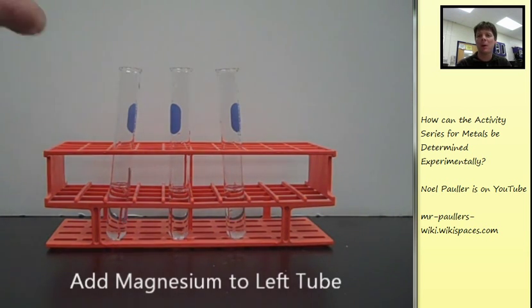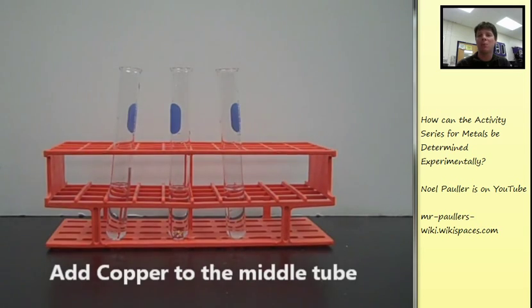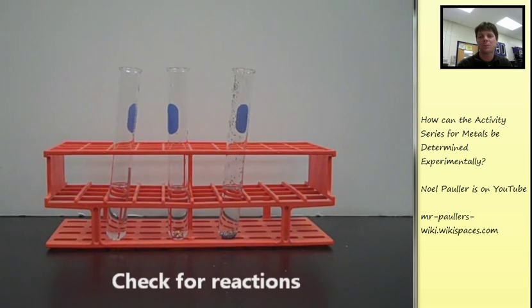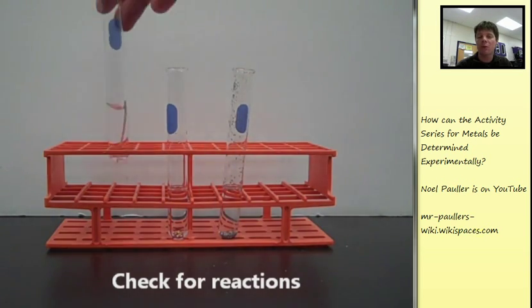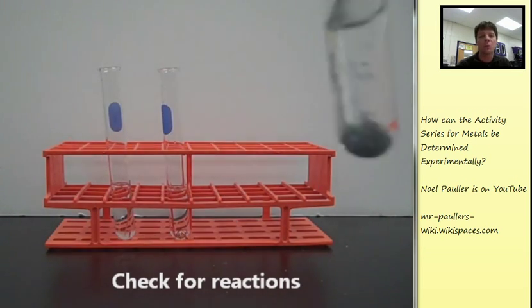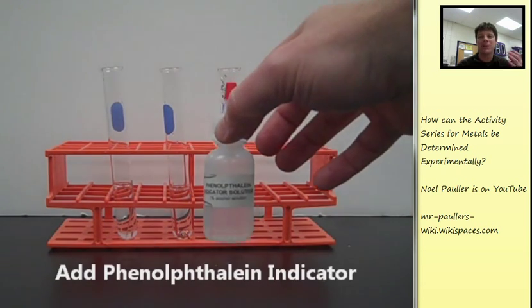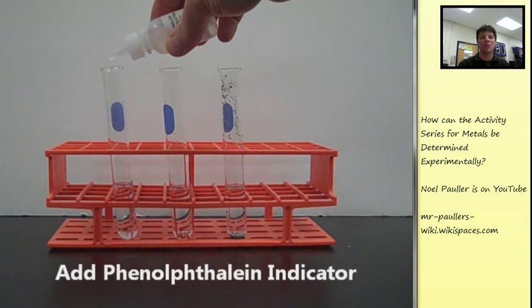The next part of our experiment is really going to be conducted to try to break this tie that we have between zinc and magnesium metals. We placed each of the three different metals into water. This was room temperature water. We can see that at this point, there's no signs of chemical change occurring.